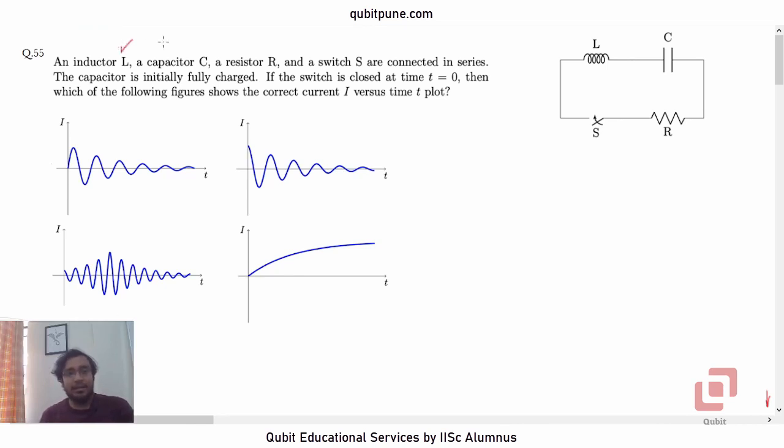An inductor L, capacitor C, and a resistor R and a switch S are connected in series. The capacitor is initially fully charged. If the switch is closed at time t equal to 0, then which of the following figures shows the correct current i versus time t plot?